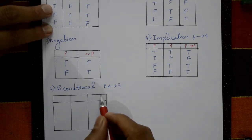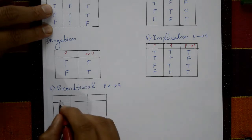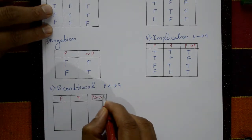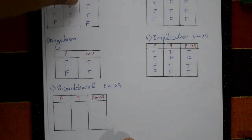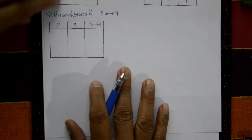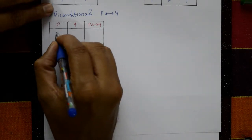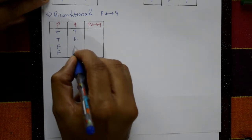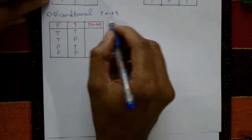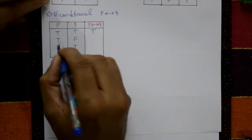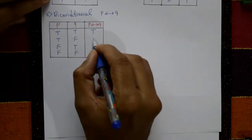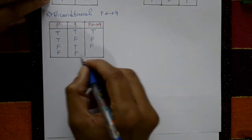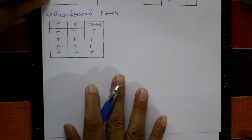Fifth one: biconditional. P biconditional Q. P is true, true, false, false and Q is true, false, true, false. Using biconditional: true biconditional true is true, true biconditional false is false, false biconditional true is false, false biconditional false is true.